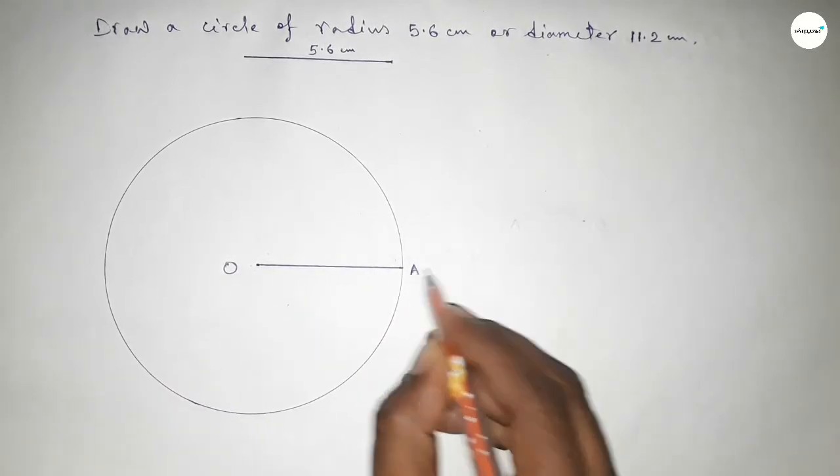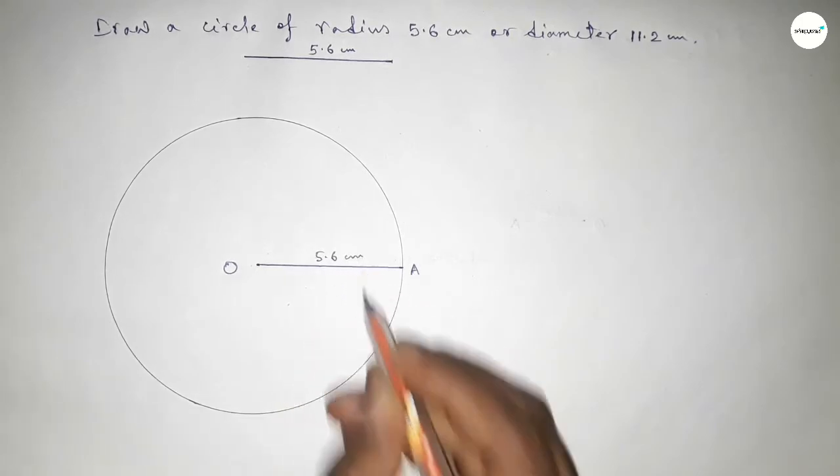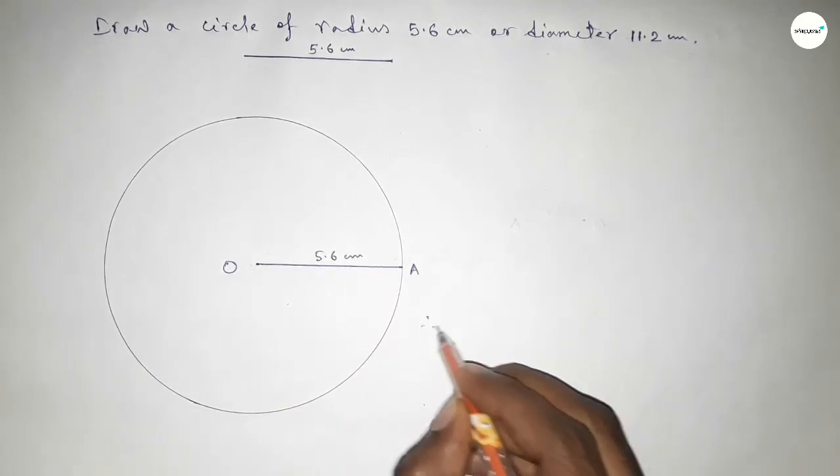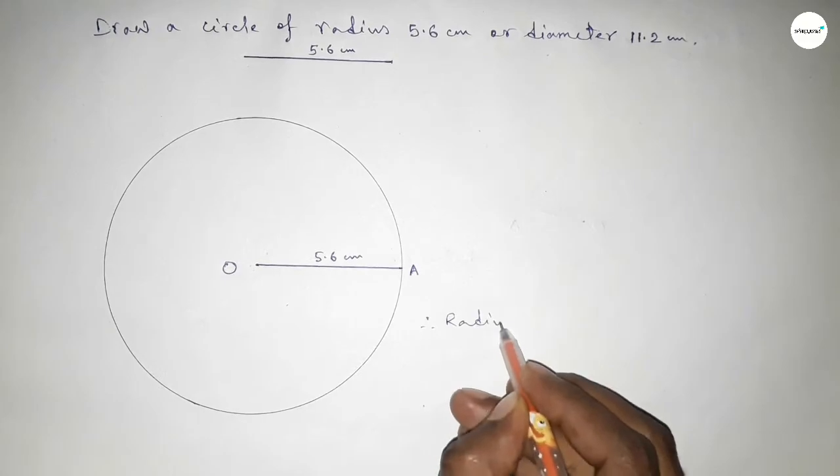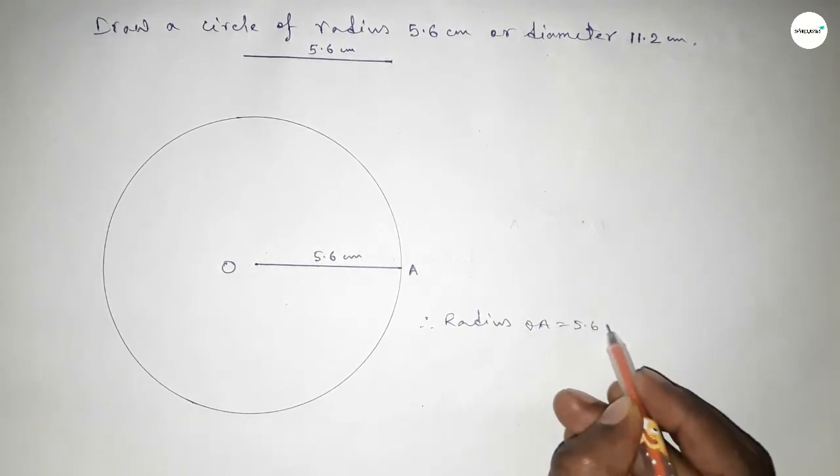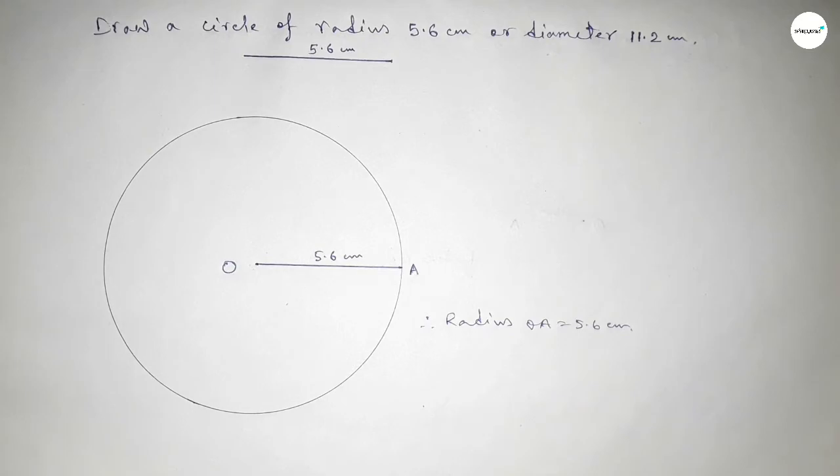And here A. OA equals 5.6 centimeter. So therefore, radius OA equals 5.6 centimeter. That's all.